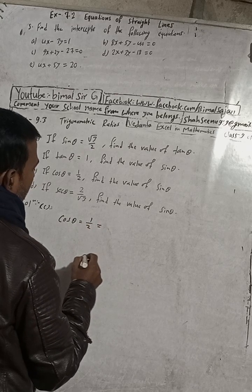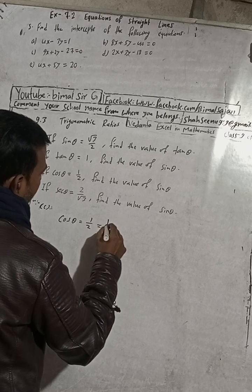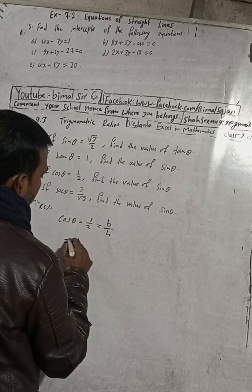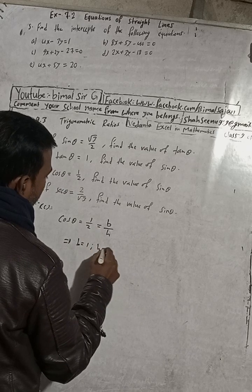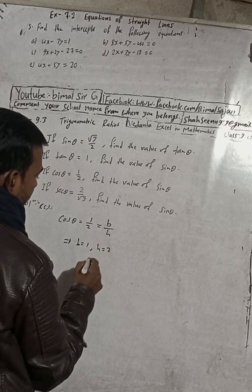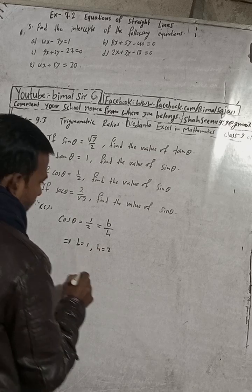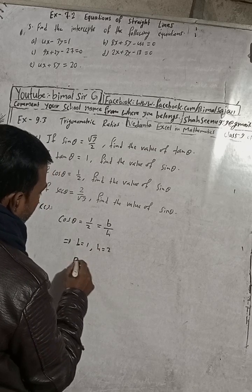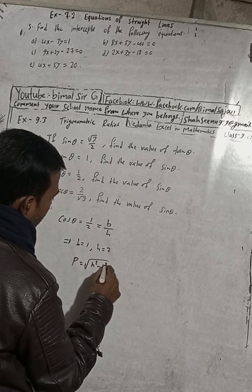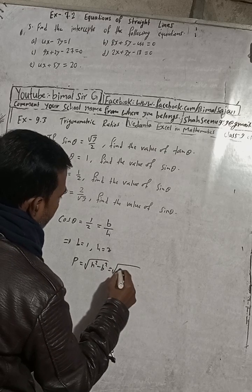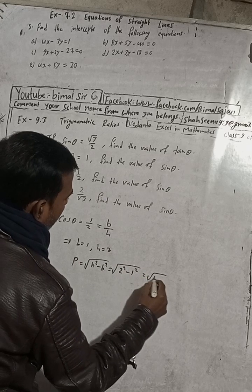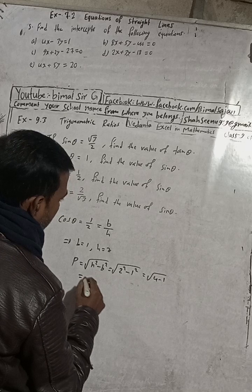Cos θ equals 1 by 2, which means B by H equals 1 by 2, so B equals 1 and H equals 2. We now have to find P. Using the Pythagorean theorem, P equals root under H squared minus B squared, which is root under 2 squared minus 1 squared, equal to root under 4 minus 1, which gives root 3.